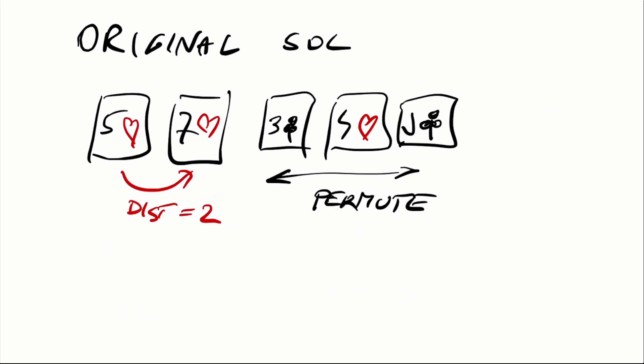It cannot be more than six in both directions, so from the five to the seven the distance is only two. If it were different hearts then we could swap them around.